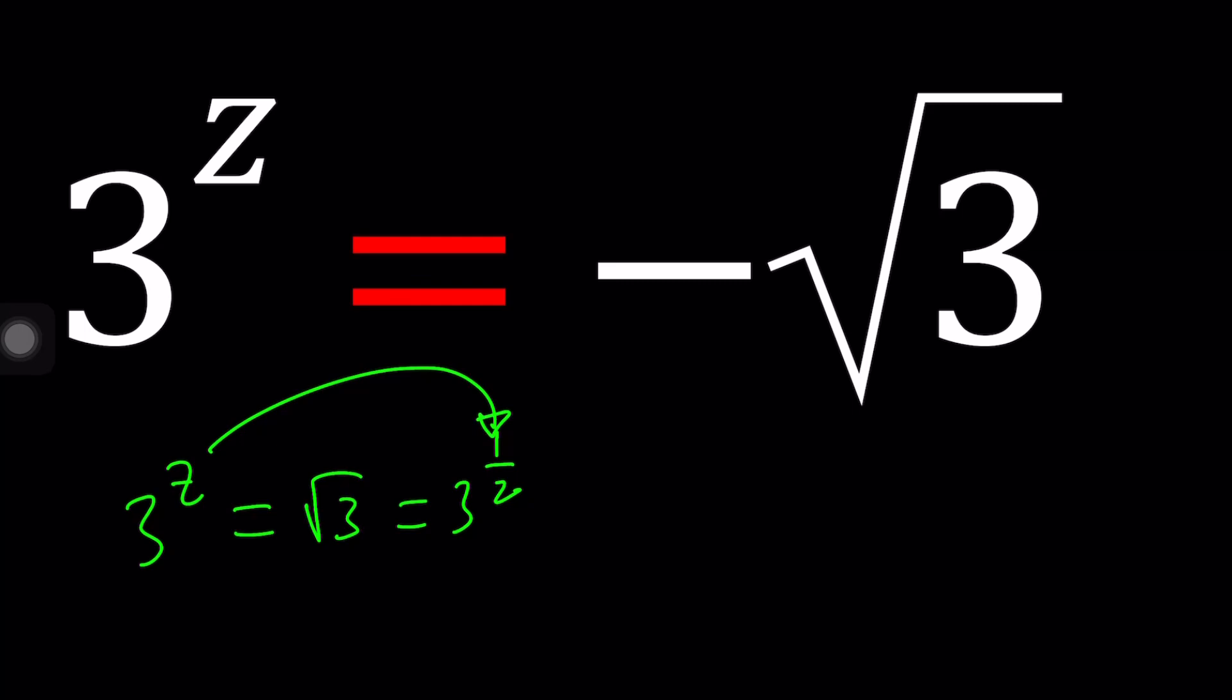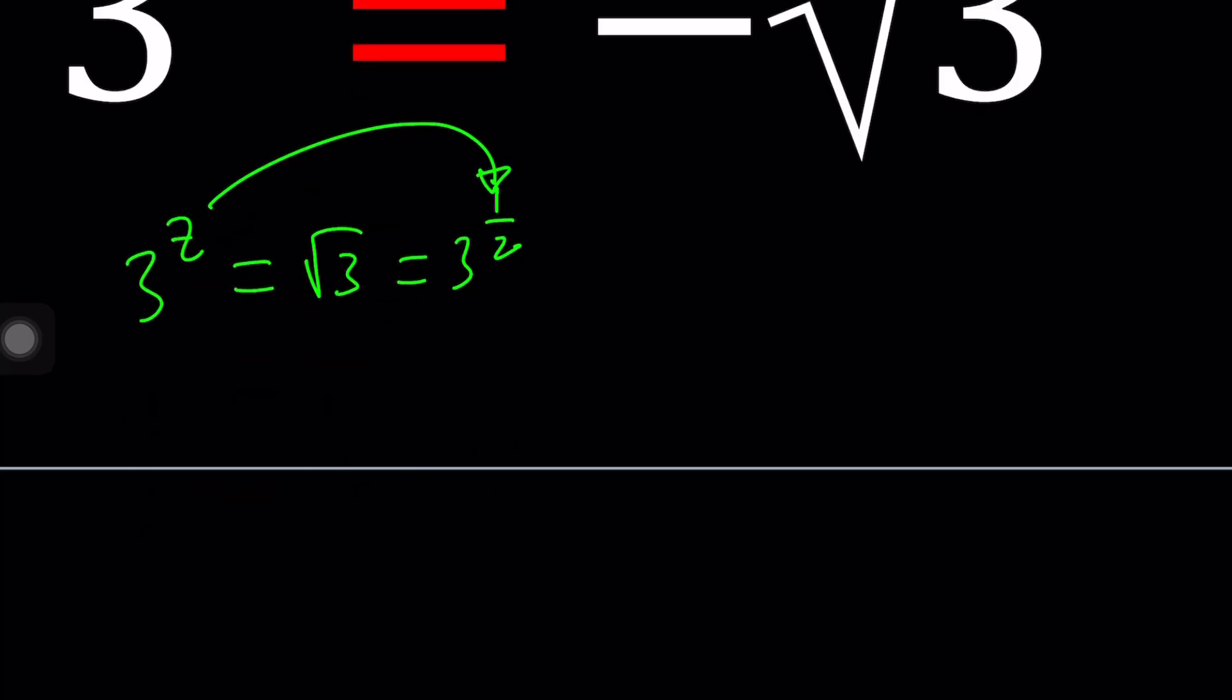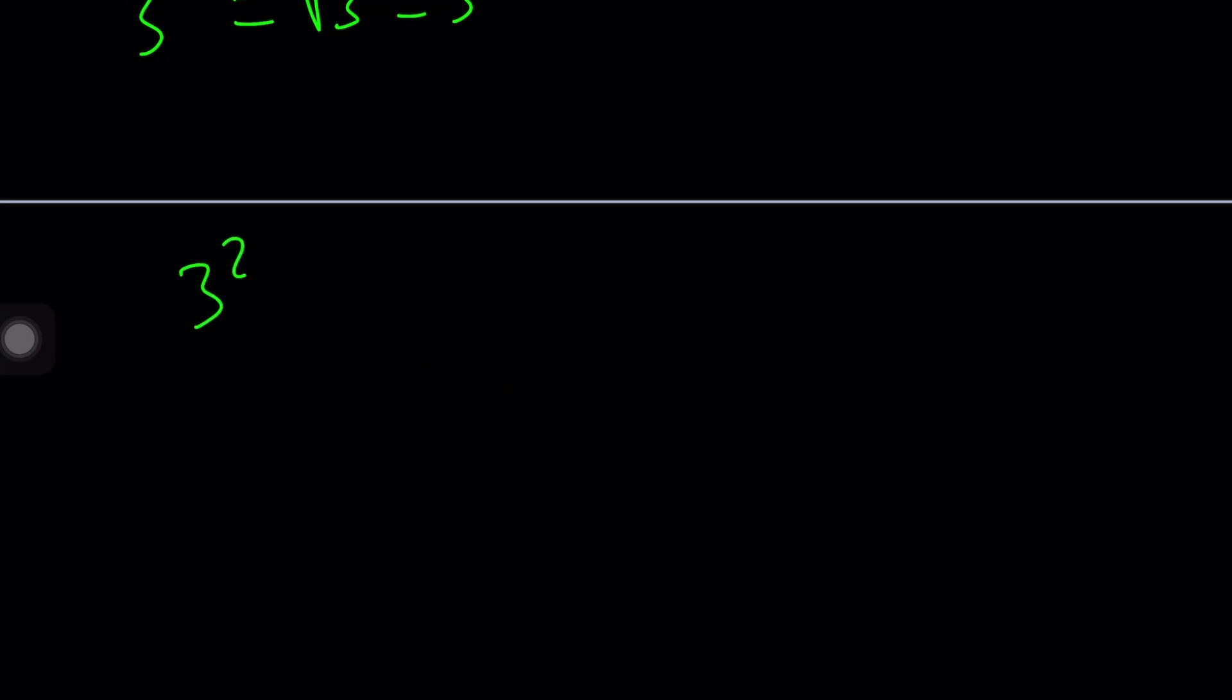Let's see how we can solve it. We have 3 to the power z, which is an exponential, but we're going to use Euler's number for our exponentials because it's better and we can compare them easily. How do you write 3 to the power z using e as a base? There's a formula, or something called complex exponentiation. This can be written as e to the power z ln 3.